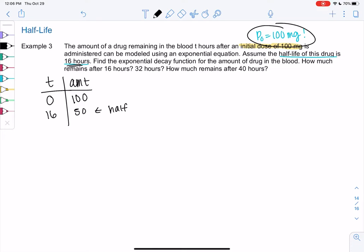And this pattern continues. So then another 16 hours would be 32, and it cuts in half again. So at 32, it would be 25. And so then let's just do it one more time. So another 16 hours passes, so that would be 48 hours, and it cuts in half to 12 and a half. So that's all half-life is, is every 16 hours, it cuts in half.